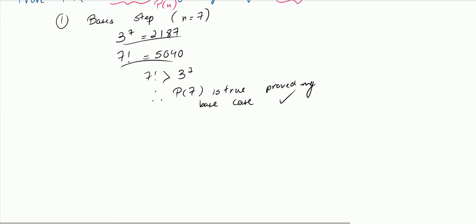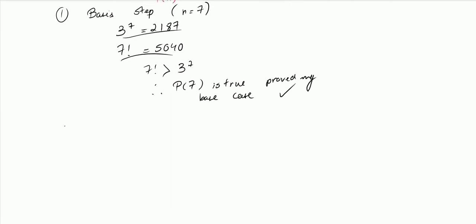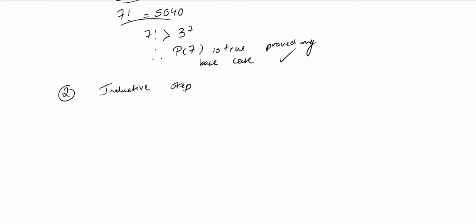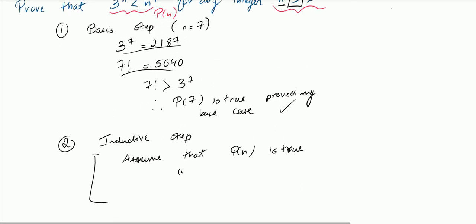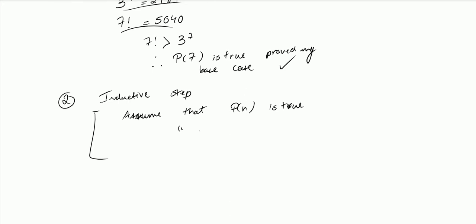Now the second part of the proof is the inductive step. This is where it gets kind of tricky. In my inductive step, I first assume that P(n) is true — that is, I'm assuming that 3 to the n is less than n factorial.